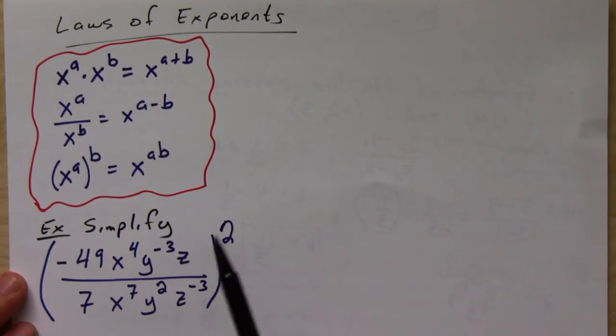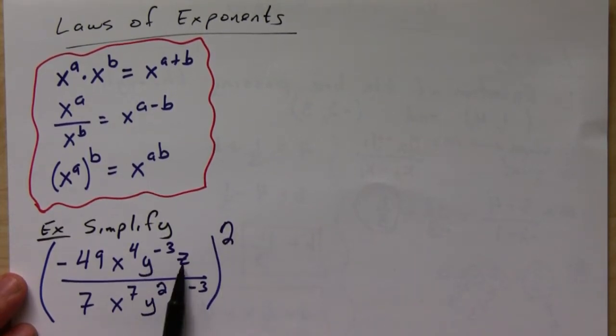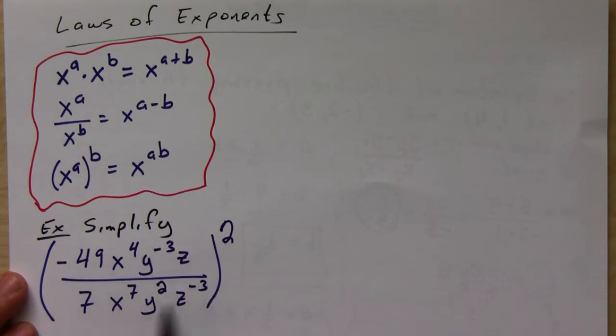There are two ways to do this: you can either square everything first and then simplify, or you can simplify everything inside first and then square it.